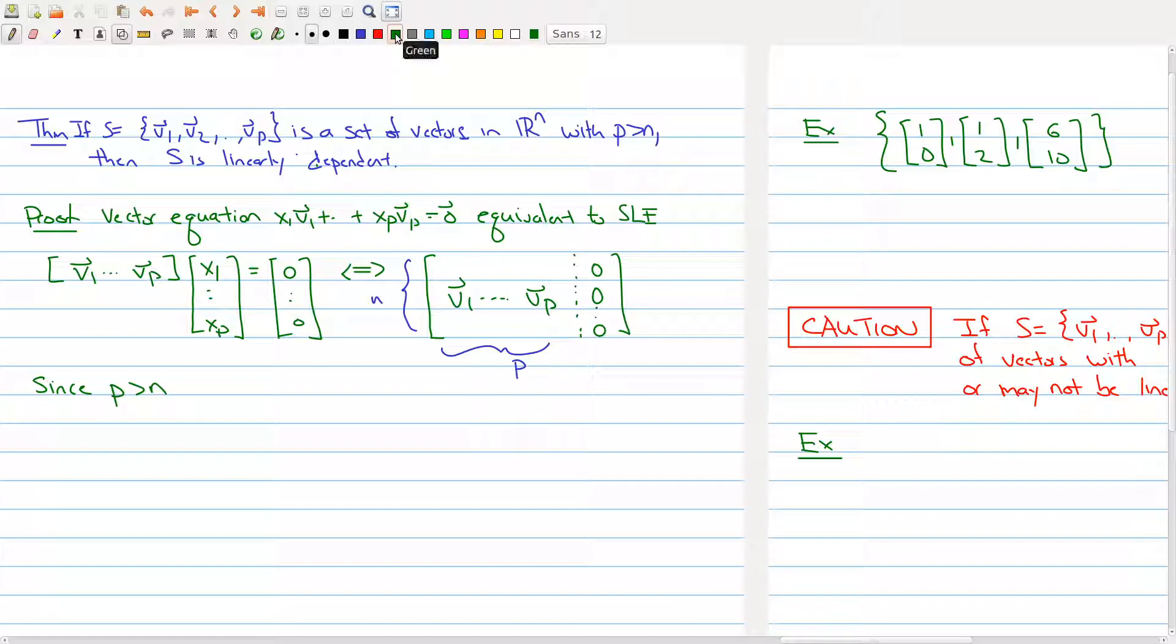So, because p is greater than n, we have more columns than rows. So, we cannot have a pivot in each column.